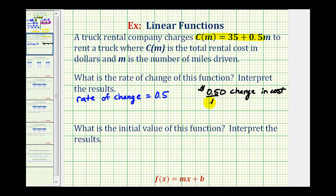And the change of x, or in this case, the change of m represents the change in the miles driven. So to interpret this, because they're both positive, there will be an increase of 50 cents in cost for every one mile driven. The total cost will increase 50 cents for every mile driven.